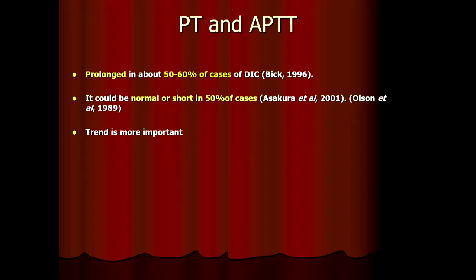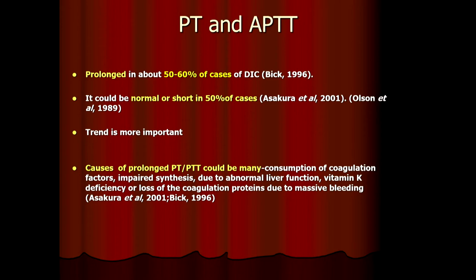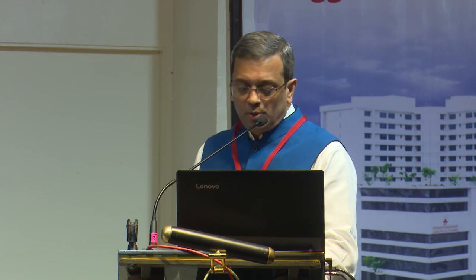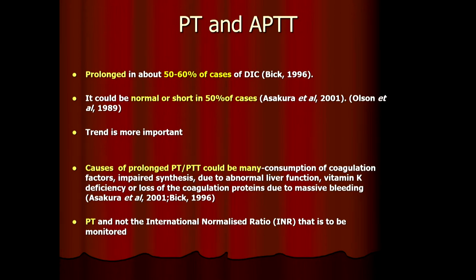PT-PTT is another test. PT-PTT is prolonged in only 50% of DIC cases — it could be normal or even short in 50% of patients. The trend of prolonging PT-PTT over time gives more information than a one-off value, because so many other reasons can prolong PT-PTT in a given patient — drugs, liver cell failure, active ongoing hemorrhage, hemolysis. So PT-PTT is not specific for the diagnosis of DIC. And please don't use INR for DIC patients — INR is only for warfarin and possibly the MELD score for liver specialists. PT is what is used: 3 seconds difference between patient and control or more is considered significant.